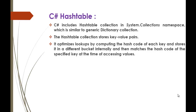Hashtable collection stores key-value pairs. Suppose you want to store some value in a Hashtable, then it stores the value in the format of key-value pairs. It optimizes lookups by computing the hash code of each key and stores it in a different bucket internally.